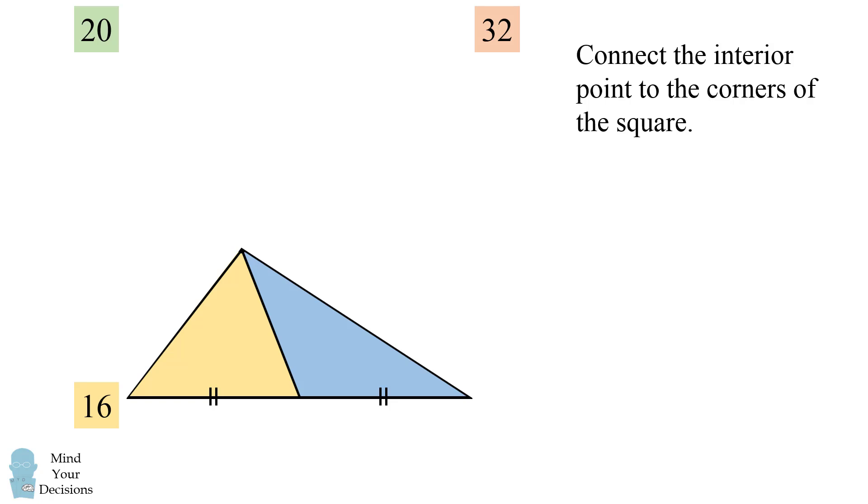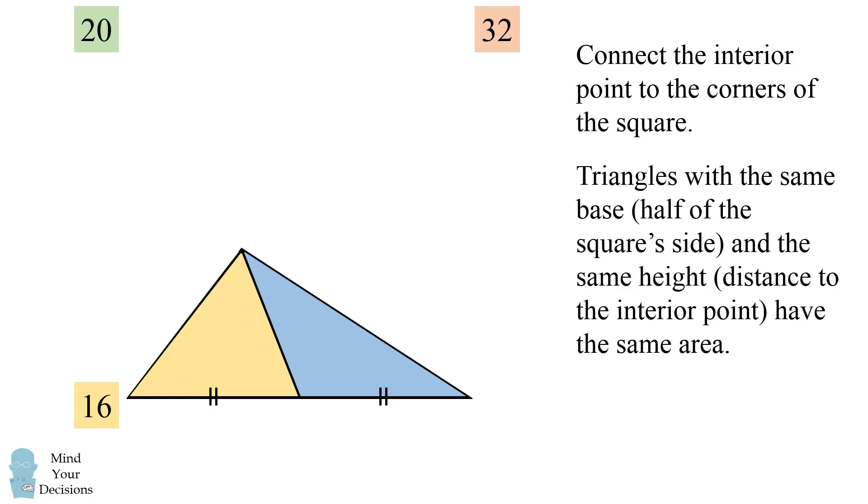Now focus on just these two triangles which are along the bottom side of the square. Triangles with the same base, which is half of the square side, and the same height, which is the distance from the square side to the interior point, will have the same area because they have the same dimensions for base and height. So these two triangles will have the same area, and I'll label the area as A.